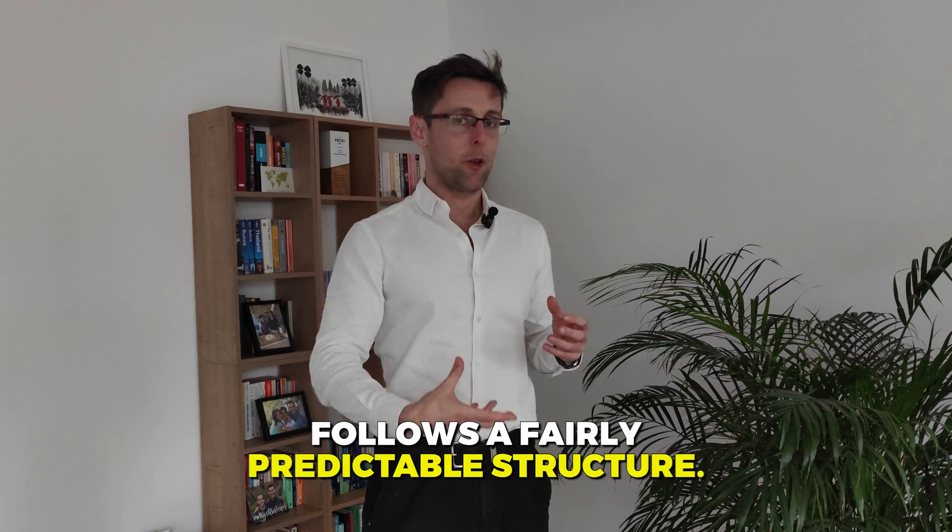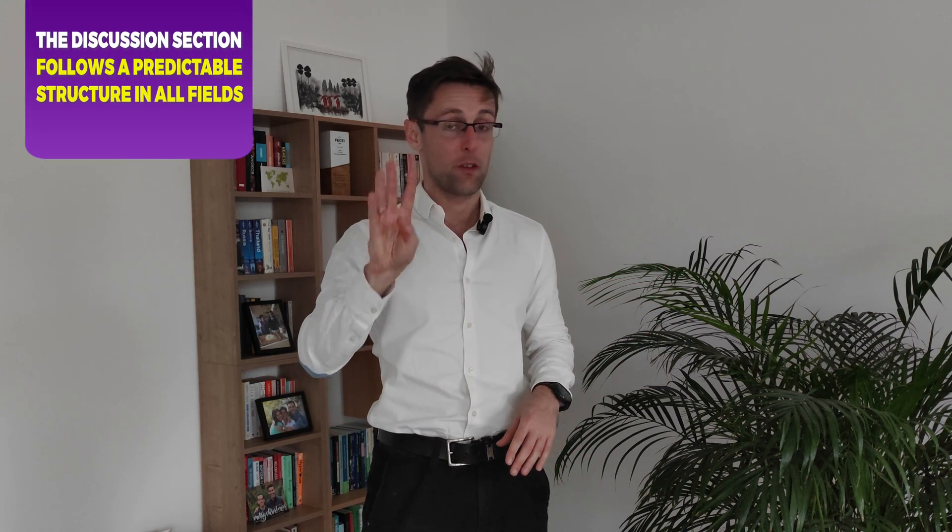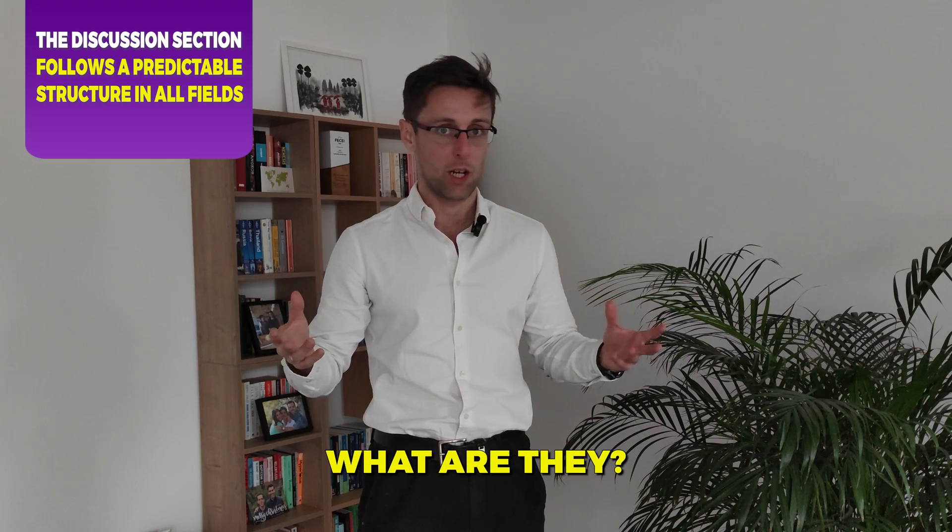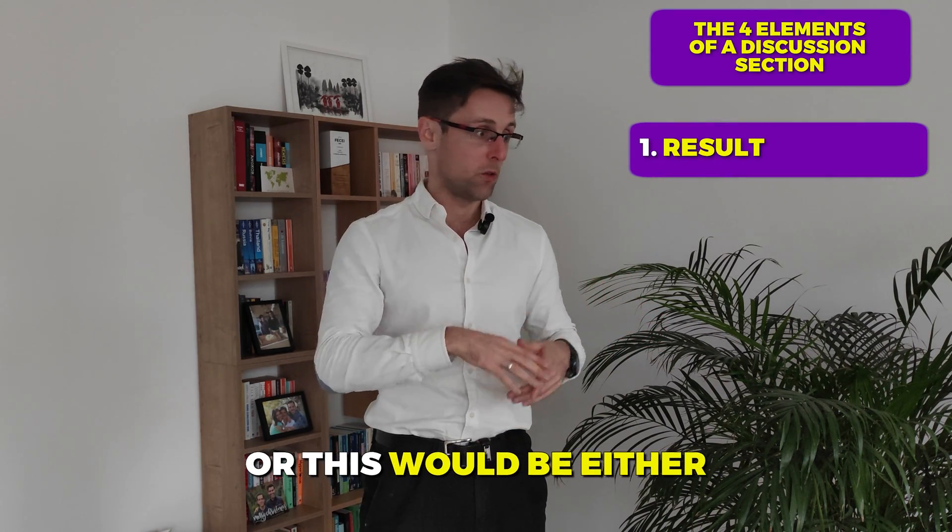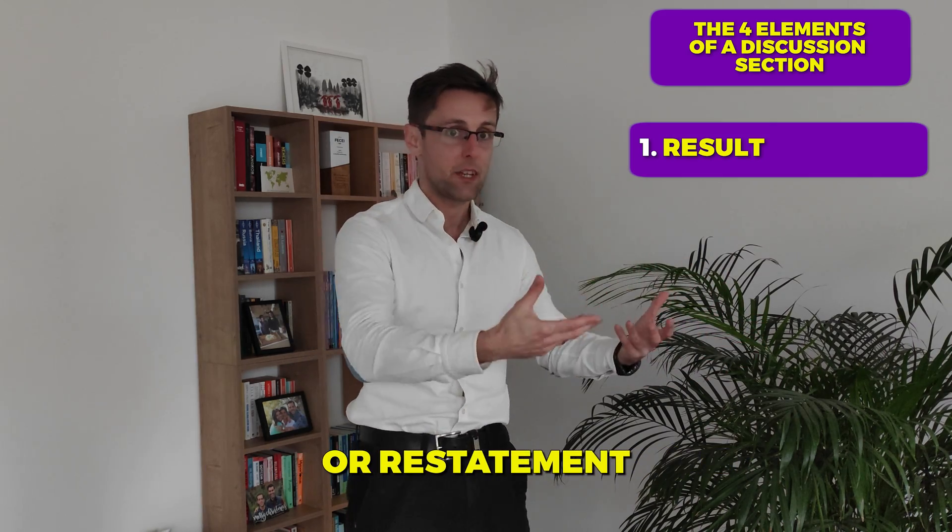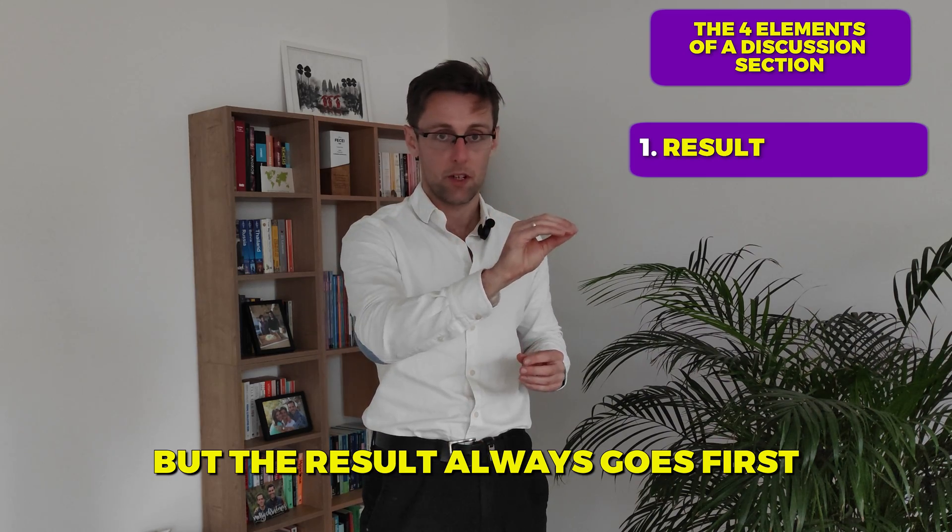So the good news about the discussion section in a research paper is that it follows a very predictable structure. You're probably thinking like, what? Really? Why has nobody told me that before? Well, this is really true. No matter which field you're in, what you're doing, there is a very predictable structure that consists of four simple elements. What are they? The first one, R, is result. Or this would be either the statement of the result or restatement if your discussion is separate, but the result always goes first.